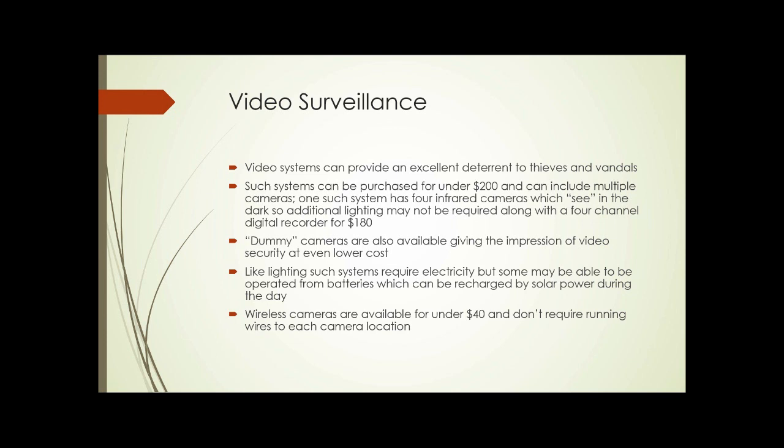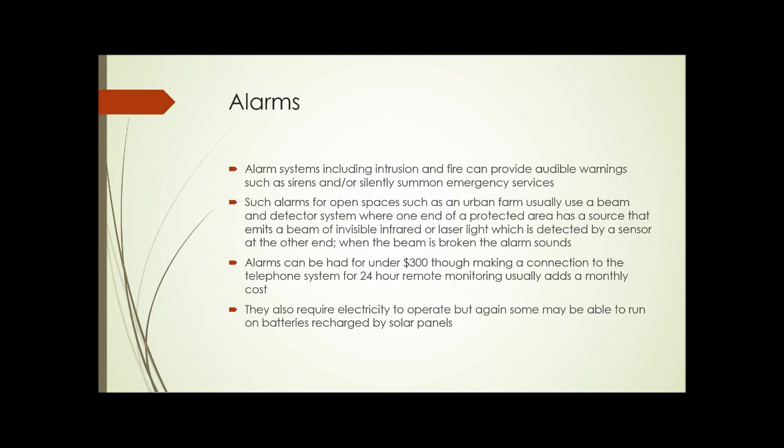Wireless cameras can be mounted and broadcast — typically using an IP network type of system. Alarm systems, including intrusion and fire, give audible warnings such as sirens and/or silently summon emergency services. Such alarm systems for open spaces like an urban farm usually use a beam and detector system. If you imagine a line where one end has a beam source and the other end has a detector, if something breaks that beam momentarily — like a person walking through — that activates the alarm, whether it sounds or quietly summons the police depends on how it's set up.